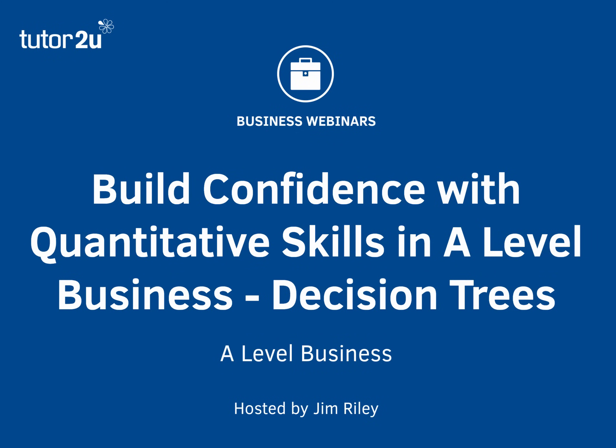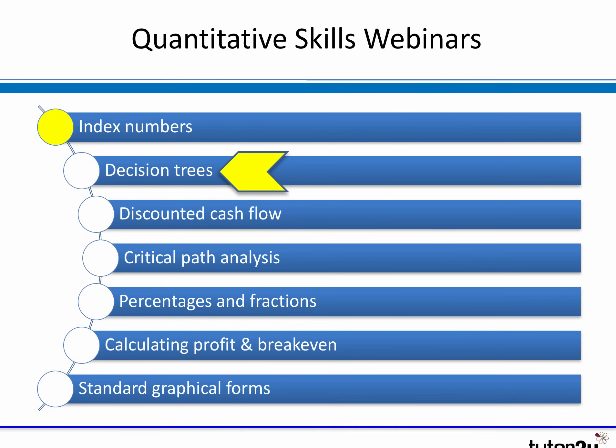This is a recording of a recent student webinar where we took a look at how to use decision trees, a key quantitative skill for A-level business students. It's the second in a series of short webinars looking at the numerical skills that A-level examiners want students to be confident with and use in the exam.